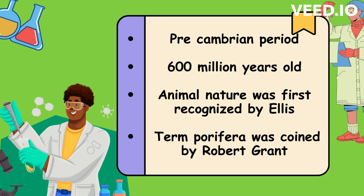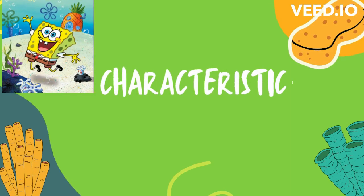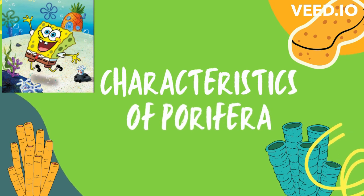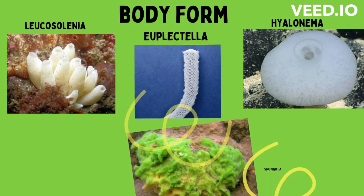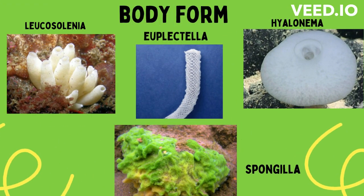These are sessile and plant-like organisms, but their animal nature was first recognized by Ellis. The term Porifera was coined by Robert Grant. Now, general characteristics: first, body form.